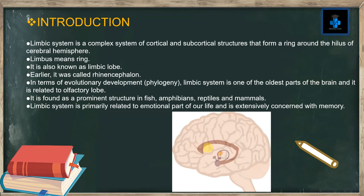The limbic system is a complex system of cortical and subcortical structures that form a ring around the hilus of the cerebral hemisphere. The word limbus means ring, and it is also known as the limbic lobe. Earlier it was called rhinencephalon. In terms of evolutionary development, the limbic system is one of the oldest parts of the brain and is related to the olfactory lobe. It is found as a prominent structure in fish, amphibians, reptiles, and mammals, and is primarily related to the emotional part of life and is extensively concerned with memory.